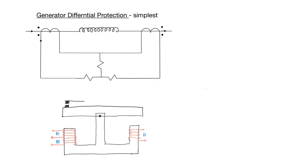Let's now have a look at the operation of a differential protection relay by looking at the simplest form of differential protection, and that is in protecting the windings of a generator. The first differential relays ever built were based off the principles of electromagnetics and electromagnetic circuits. A differential relay has three elements: a difference element and two restraining elements, R1 and R2.